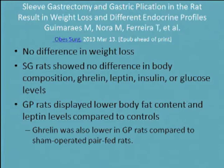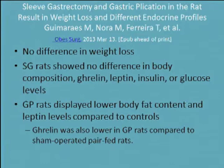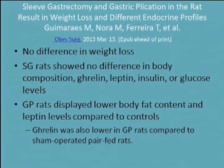I'll briefly mention a rat study — the only mechanistic study I could find. We looked at gut hormones in our initial trial, but with anterior and greater curvature plications mixed together the data were all over the map. In the rat study, plication rats had lower body fat content and leptin levels compared to controls, and lower ghrelin compared to sham-operated rats. However, since this operation devascularizes the fundus but doesn't resect it, it's really unknown what's happening with ghrelin and whether gastric transit is increased as with sleeve gastrectomy to produce a hindgut effect.